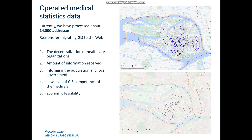Informing the population and local governments is another reason. According to the federal law on state secrets, we cannot share secret information about public health. However, local authorities are required to inform the population in their territory. The next reason is the low level of GIS competence among medical specialists — this does not allow us to use developer GIS at the organizational level, and web GIS should save their time and solve this problem. The last reason is economic feasibility: maintaining a non-core GIS specialist at a medical facility costs a lot of money in the long run, and we believe web GIS can solve this problem.